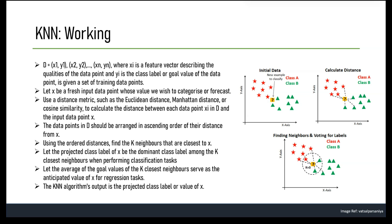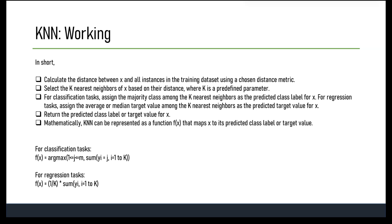In summary, the KNN algorithm makes predictions based on the distance between data points in the feature space. It assumes that data points that are close together are similar and likely belong to the same class or have similar target values. The K parameter controls the size of the neighborhood used to make predictions and should be chosen carefully based on the nature of the problem and the size of the dataset.